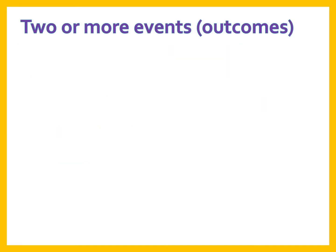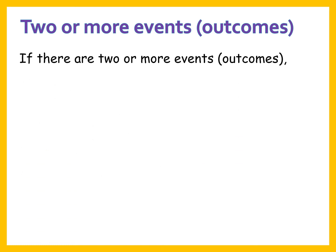When we want to measure two outcomes of two events, we use the probability rule of addition and the rule of multiplication. The rule of multiplication is covered in a different video on my website and YouTube channel. Here we are talking about the rule of addition and when it is applied.